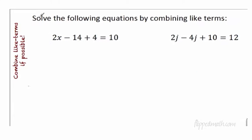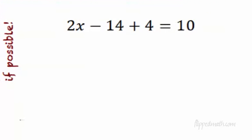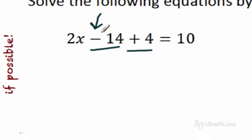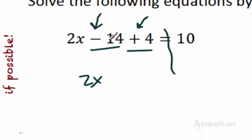Let's look at combining like terms. When we combine like terms, we look at both sides of the equation — you should always combine like terms if possible. Here we have negative 14 and positive 4; those can go together before we start solving. Remember, the sign to the left of the number goes with that number — so this is negative 14 and positive 4. Combining them: we bring down 2x, there are no other x terms. Negative 14 plus 4 is negative 10, so we write minus 10. All of that equals 10 — now it's a two-step equation.